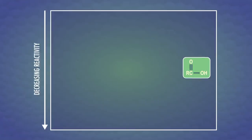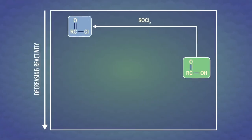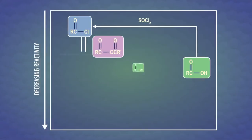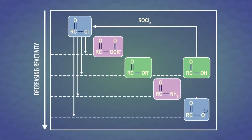I say directly because there is a roundabout way we can convert an amide to its more reactive friends, by turning the amide back into a carboxylic acid. Then we can react the carboxylic acid with phosphorus pentachloride or thionyl chloride to get an acid chloride, like we did in episode 30. And from there, there are lots of possibilities.